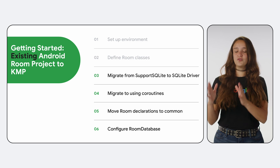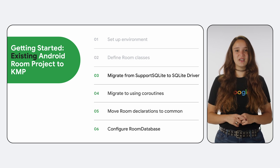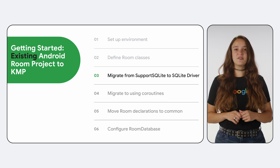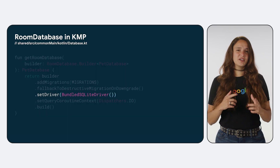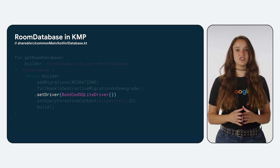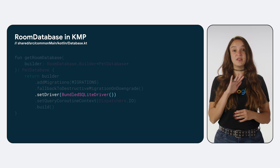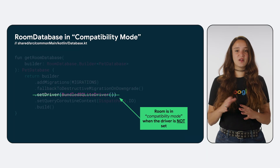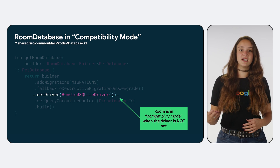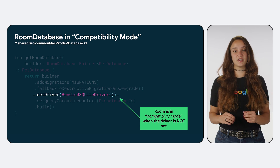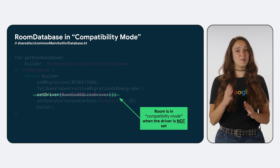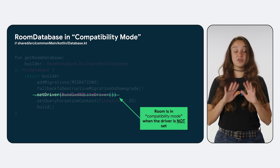But what if you had an existing Android Room project and want to use Room KMP? Let's talk about how you can move an existing project to use the KMP version of Room. You will need to migrate away from using support SQLite APIs and use SQLiteDriver APIs instead — this can be done incrementally. Without any driver set, Room is in what we refer to as compatibility mode, where it behaves like the pre-KMP version of Room. This is helpful for incremental migration because in compatibility mode, you can still have support SQLite APIs in your project and run it on Android. However, once you set the driver, anything using support SQLite APIs will fail, as Room will switch to the KMP version and expect your entire project to be KMP compatible.